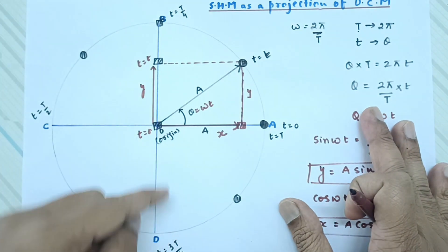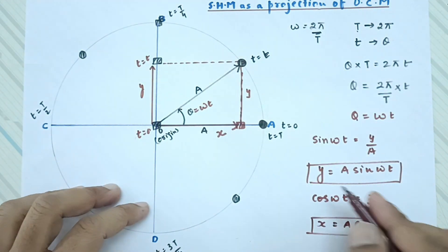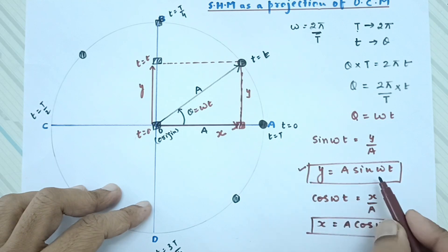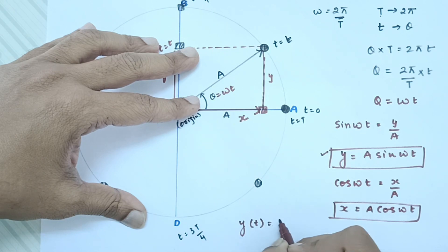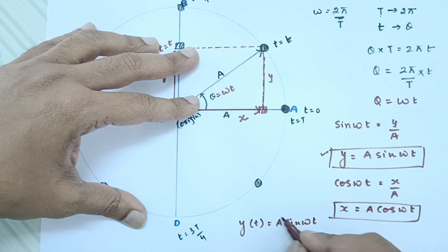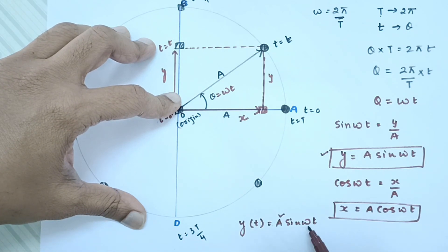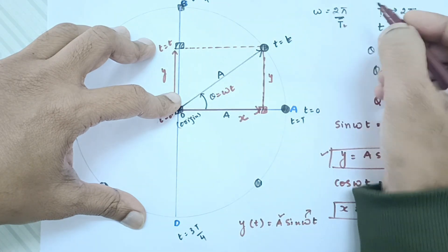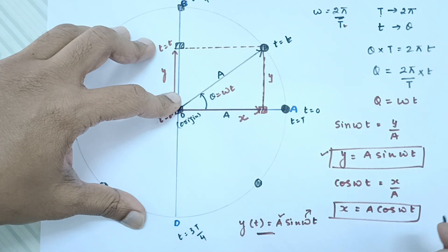Restricting ourselves to the Y-axis, this is how we obtain the expression for displacement. In most textbooks you will see y as a function of time: y(t) = A sin(ωt). Here A is constant — it is the radius of the circle. Omega is also constant since ω = 2π/T and T is constant for uniform circular motion. So y depends only on small t.